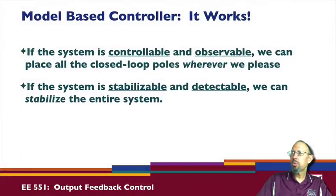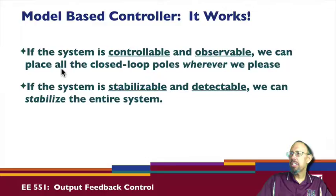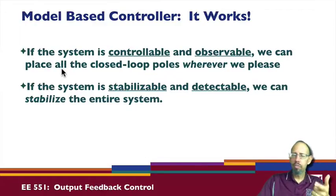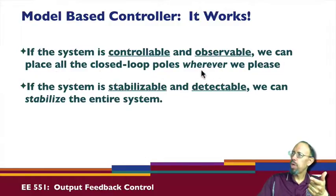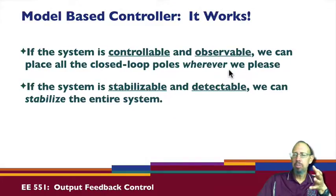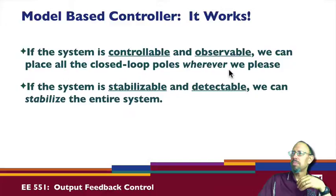Because of the separation principle, the gains K and L can be chosen independently. If the system is both controllable and observable — that is, if our system is minimal — then we can place all of the state feedback poles wherever we want and all of the observer poles wherever we want, placing all closed-loop poles wherever we want.